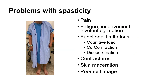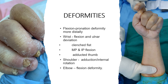Spasticity presents with loss of function, pain produced within the muscles, easy fatigability, and involuntary movement. If neglected, it results in severe contractures of the musculotendinous unit with skin maceration. It is also very important to understand there is a problem of self-image with spasticity and the stigma of deformity. The classical presentation includes hemiplegia with flexion pronation deformity, ulnar deviation, and clenched fist.